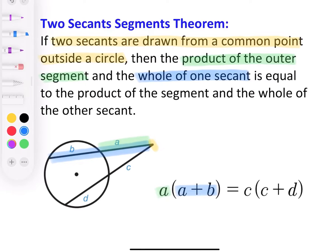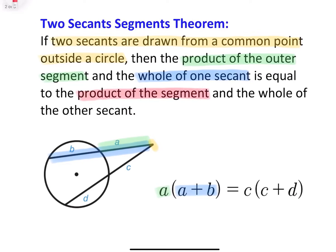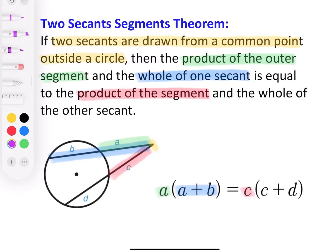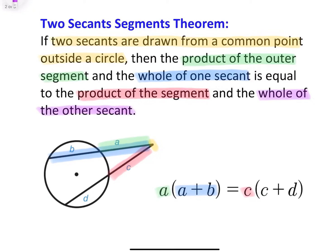That equals the product of the segment of the second secant, which is 'c', and the whole of the other, which is 'c' and 'd' combined. So that's what the two secant segment theorem states. Now we're going to use that theorem and apply it to problems.